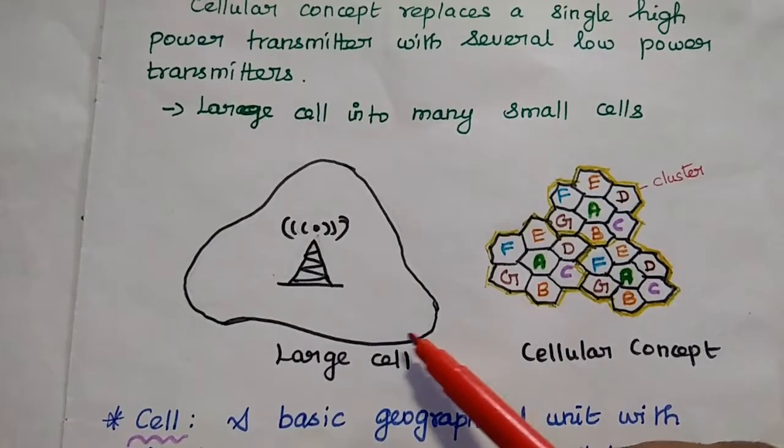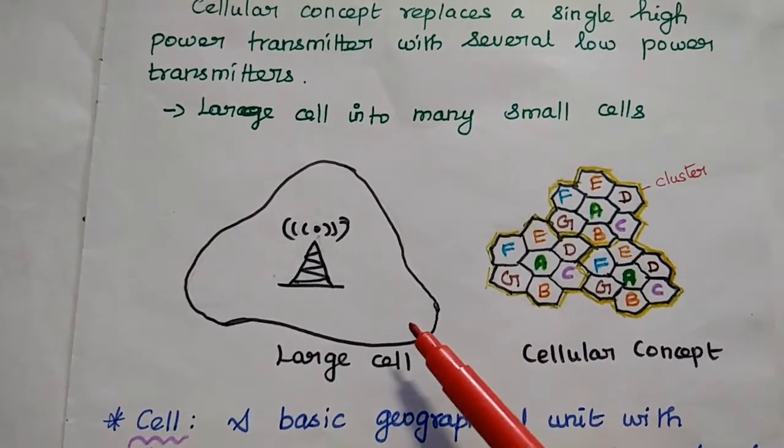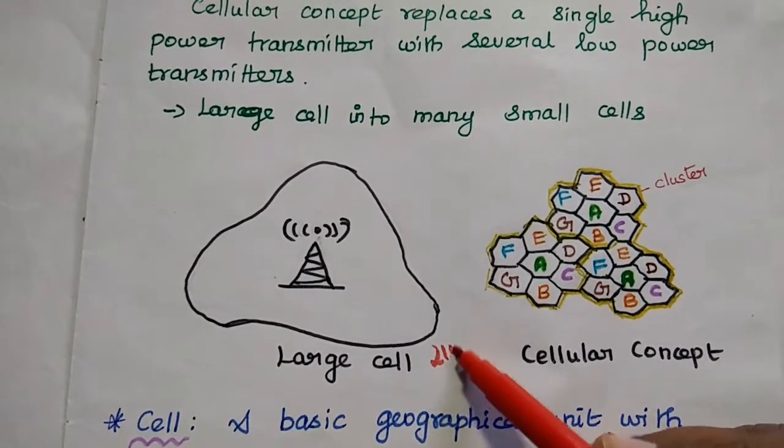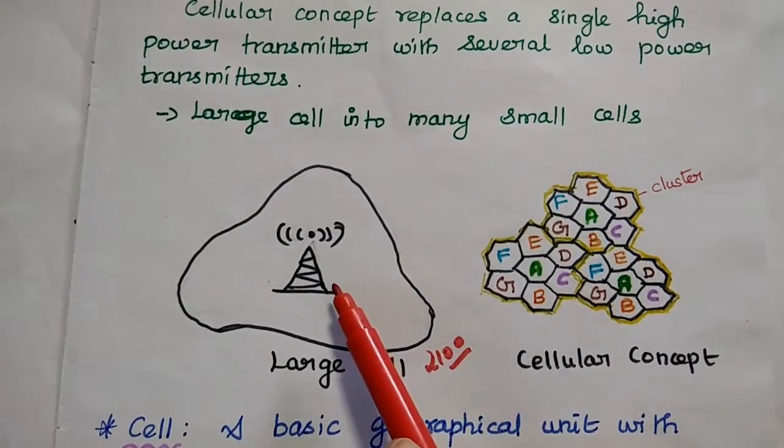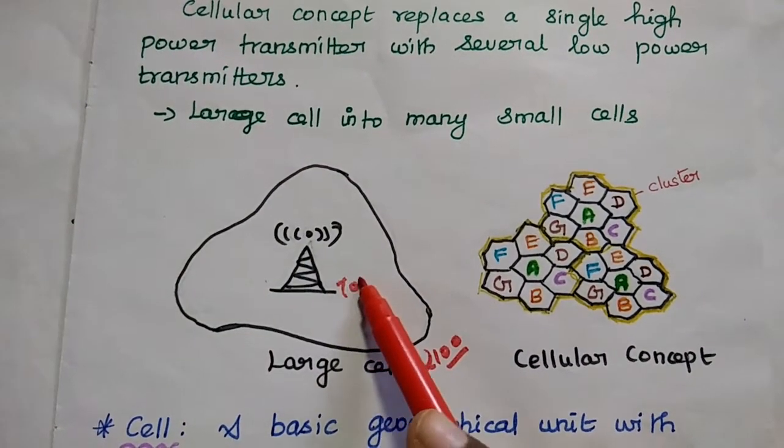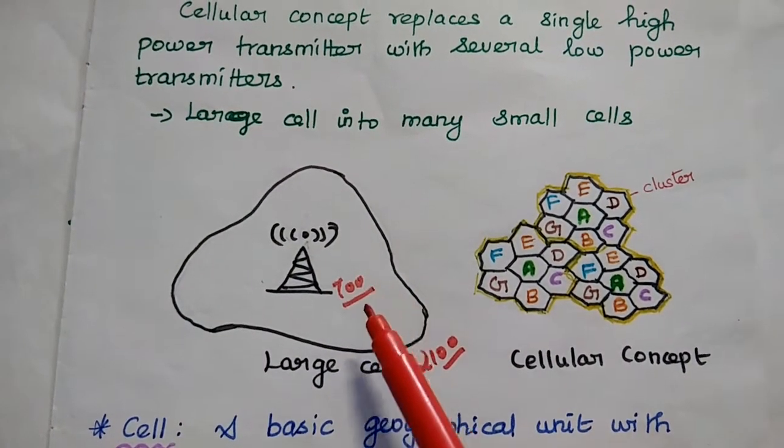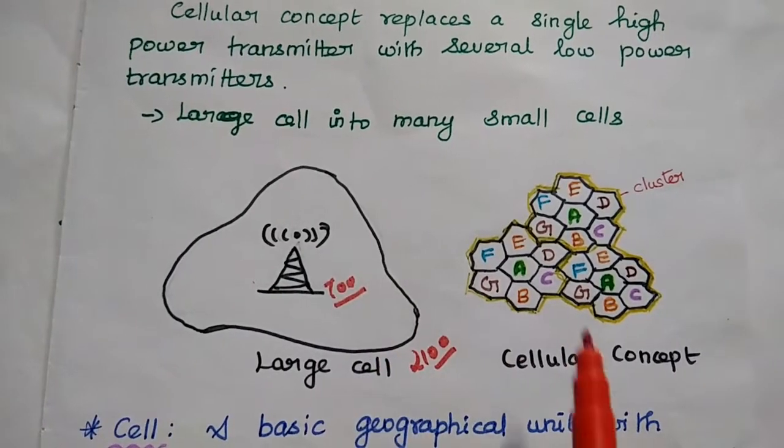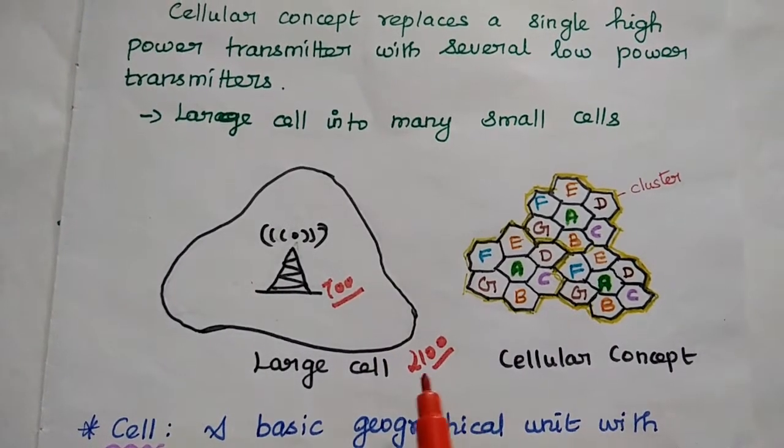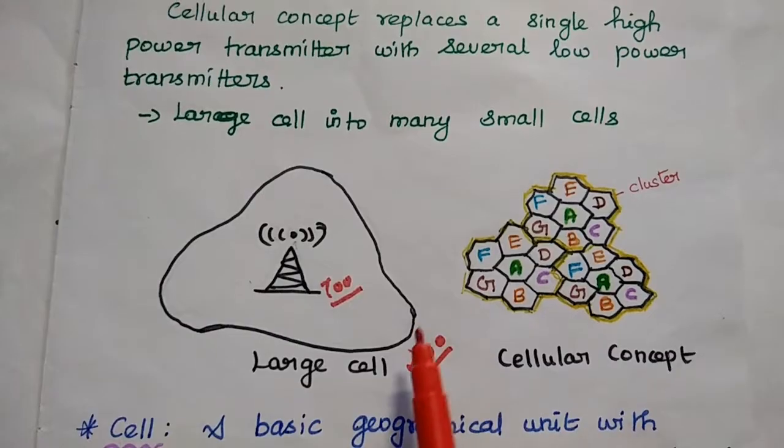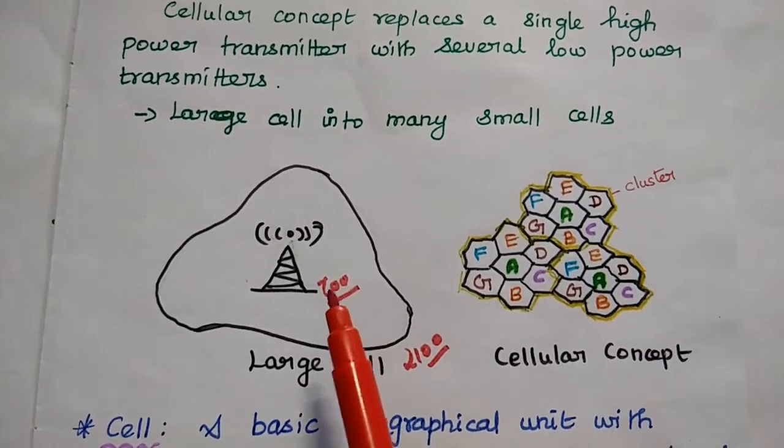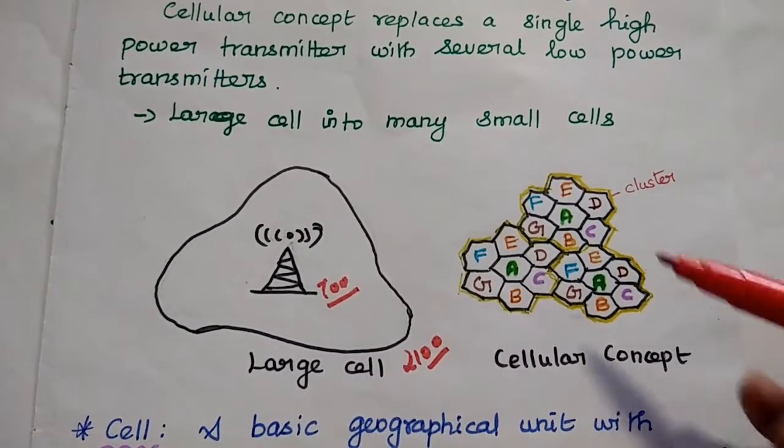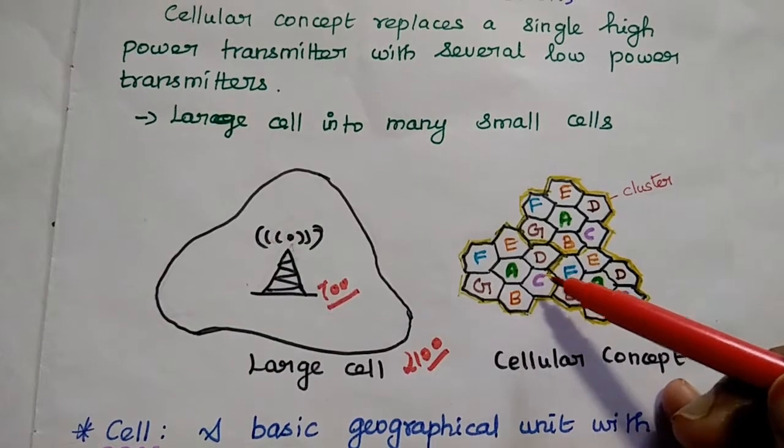Here, we can say this large geographical area is having 2,100 users but the transmitter is having only 700 channels. We can use the cellular concept to support this 2,100 users with this 700 channels. So for that, we can create the cells like this.